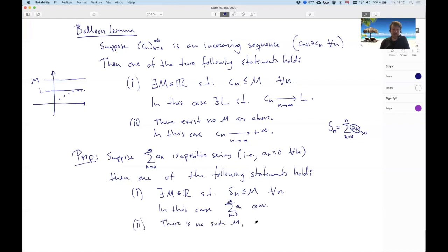Or two, there is no such m. And this infinite series here diverges to infinity. And we get this. So you can say either, so for positive series, either you converge or you diverge to infinity.